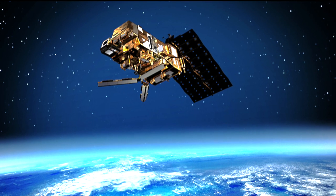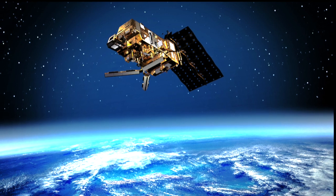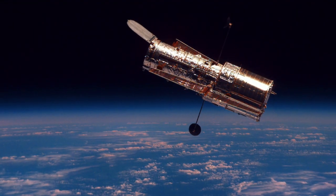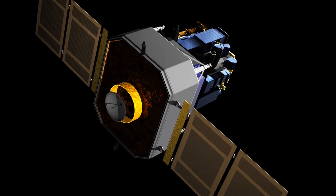Some examples include Earth-pointing spacecraft such as communications, broadcast, and weather satellites. There are inertial pointing craft like the Hubble Space Telescope, and then we have sun-pointing satellites such as the Solar and Heliospheric Observatory.